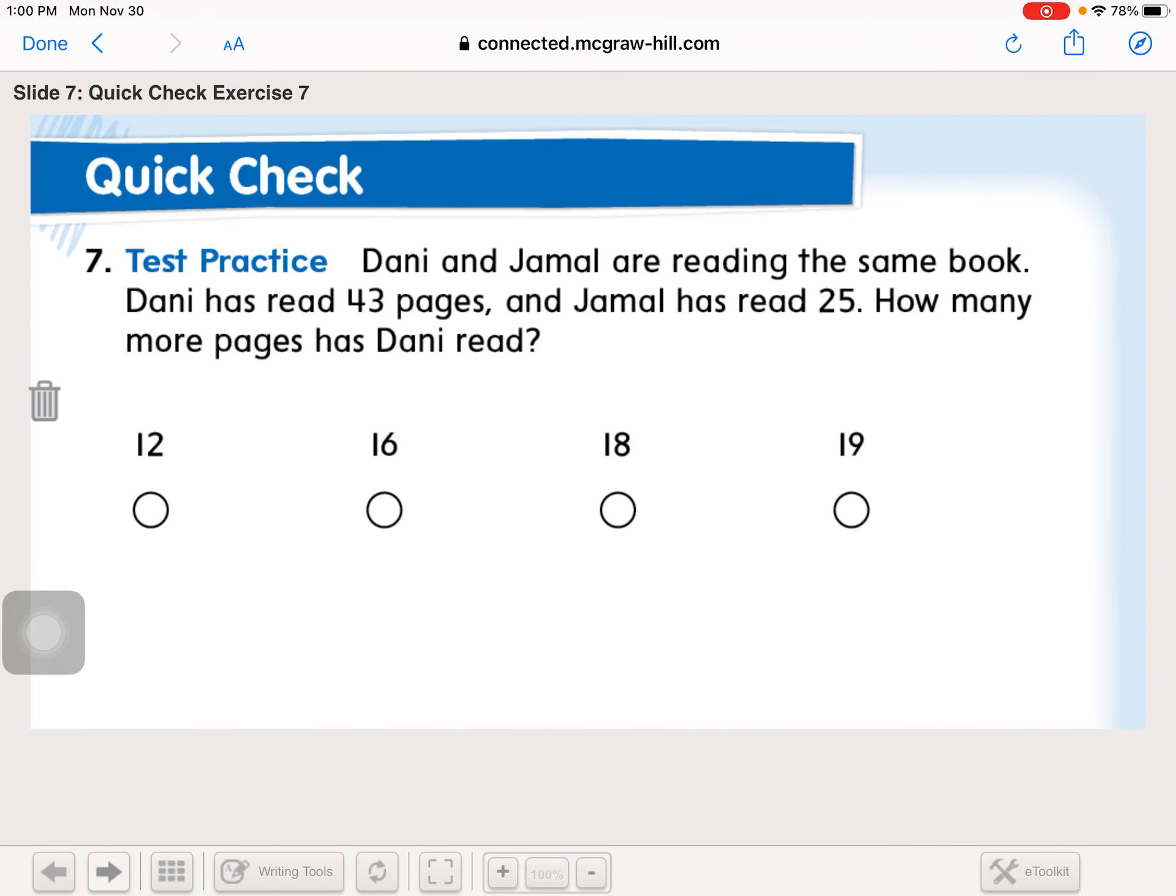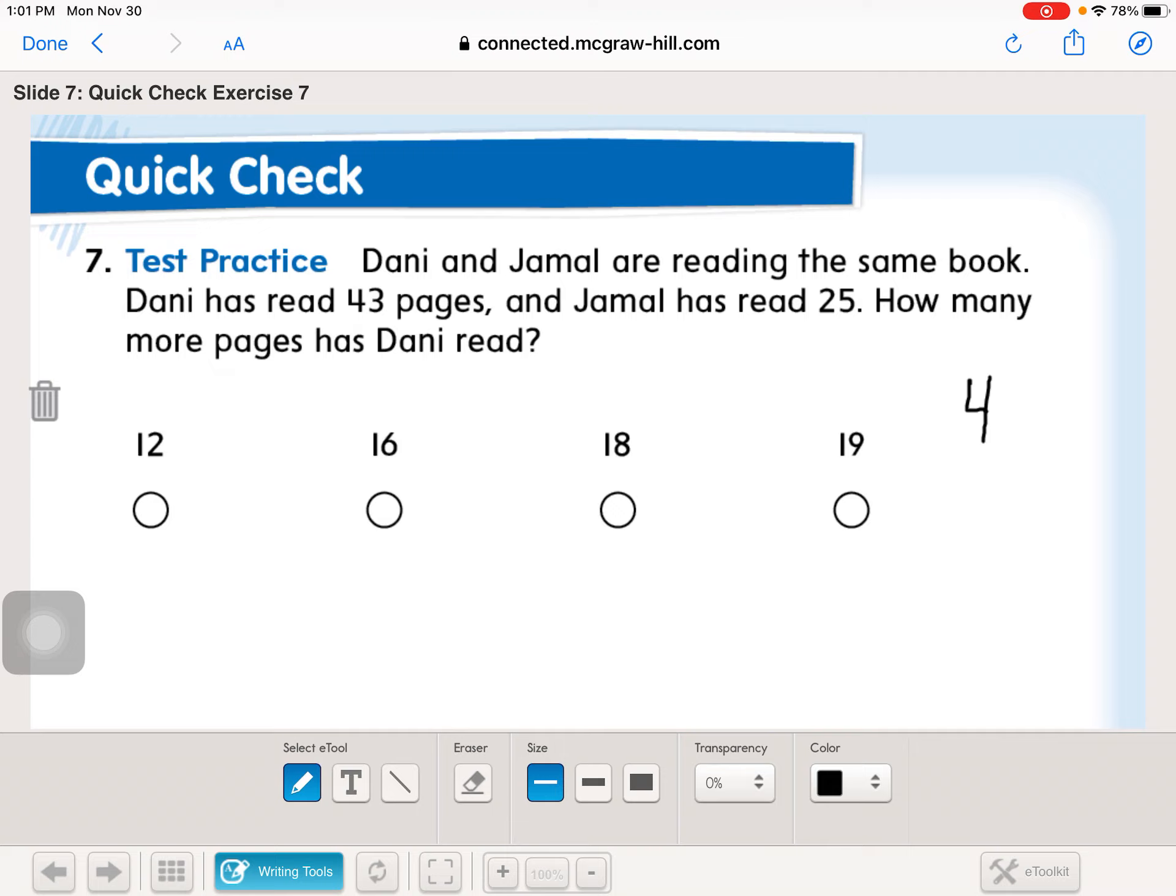Danny and Jamal are reading the same book. Danny has read 43 pages and Jamal has read 25. How many more pages has Danny read? Now we have to start with the whole, which is the bigger number. So we're going to start with how many Danny read. She read 43. Jamal read 25.